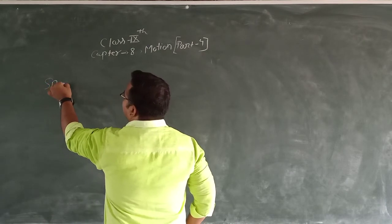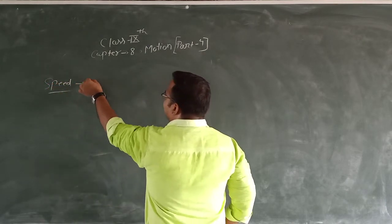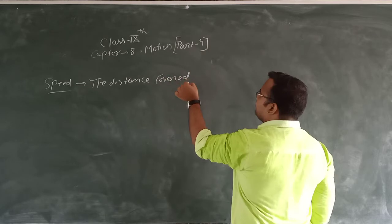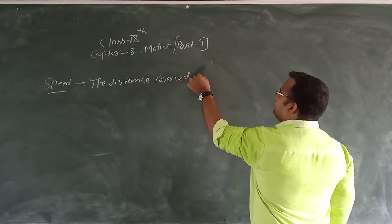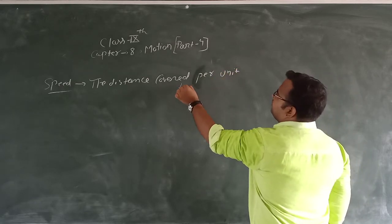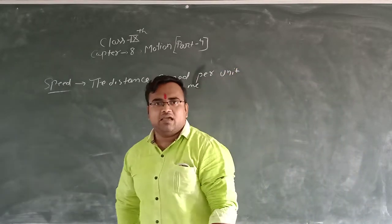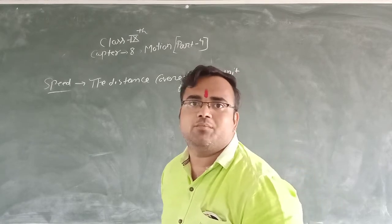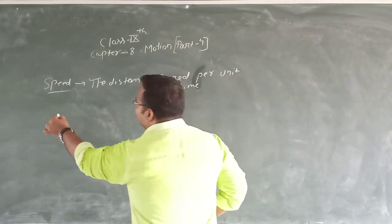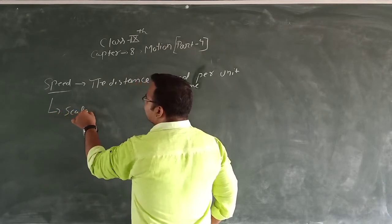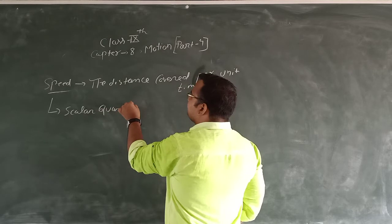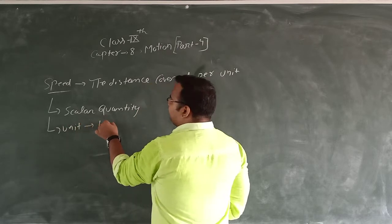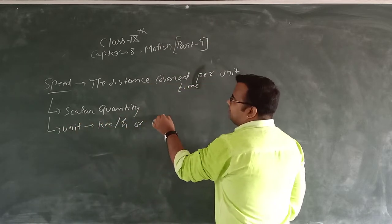Speed is the distance covered per unit time. The distance covered per unit time is known as speed. Or we can say speed is the distance covered by an object in a given period of time. Now, speed is a scalar quantity.